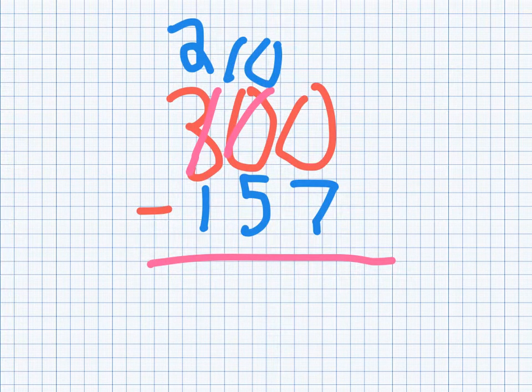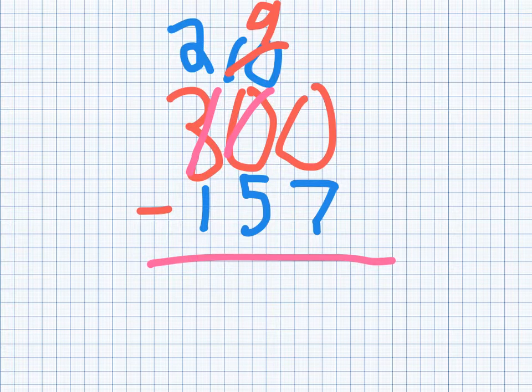But then I remember that my neighbor has to have some, so I cross that out, that becomes a 9, and then that becomes a 10.